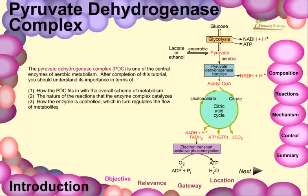Welcome friends. In this video tutorial we will be talking about the pyruvate dehydrogenase complex and its role to produce acetyl-CoA from pyruvate. The pyruvate dehydrogenase complex, better known as PDC, is one of the central enzymes of aerobic metabolism. After completion of the tutorial, you should understand how the PDC fits into the overall scheme of metabolism, the nature of the reactions and enzyme complexes that catalyze them, and how the enzyme is controlled, which in turn regulates the flow of metabolites.